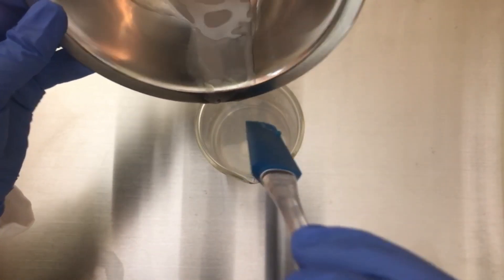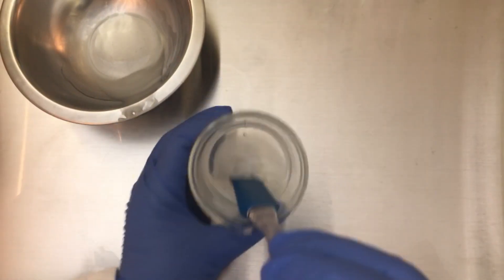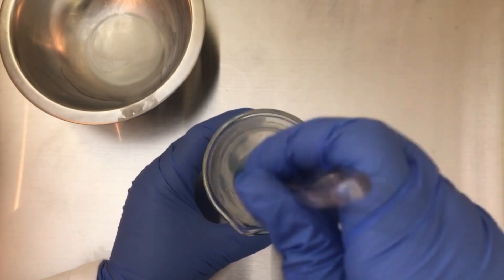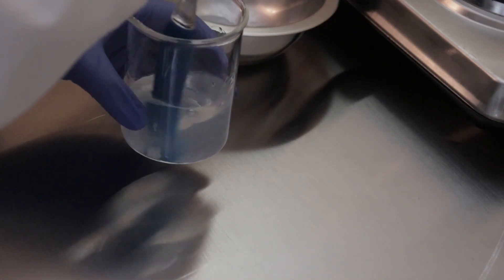Alright, so again we are just repeating those same steps over and over again slowly adding it in, and then you'll start to see the viscosity of the water began to change and less clumping like we've seen in sample A.